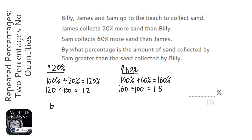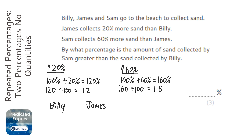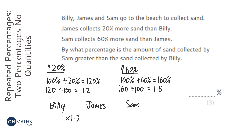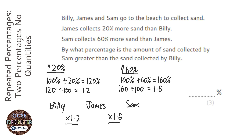So we've got Billy here, and James collects 20% more. So I take Billy's amount and multiply it by 1.2 to get James's. Then we've got Sam who collects 60% more than James, so I take James's amount and multiply it by 1.6 to get Sam's.